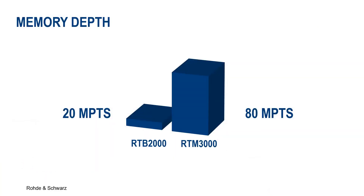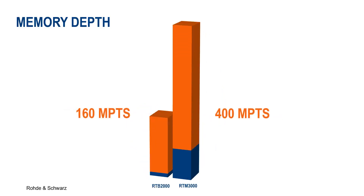Also, the 80 MHz memory depth of the RTM3000 may be the better choice compared to the RTB2000's already impressive 20 MHz memory depth. For both instruments though, history and segmented memory mode options are available, which will allow you to scroll through and analyze past acquisitions. This increases the memory depths to 160 MHz for the RTB2000 and 400 MHz for the RTM3000, which helps when capturing longer time periods of serial bus data.